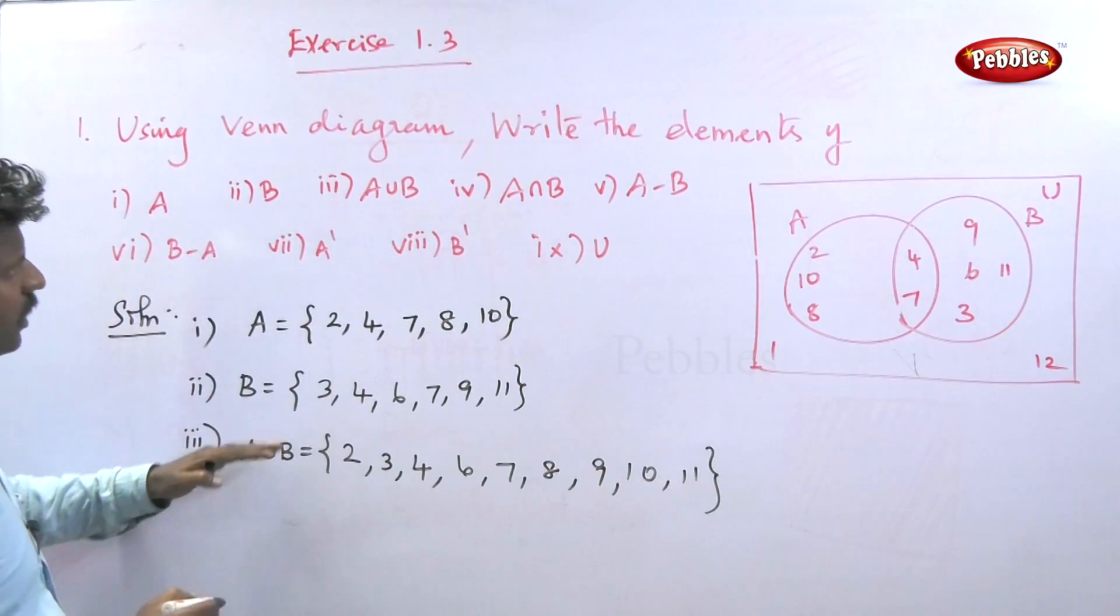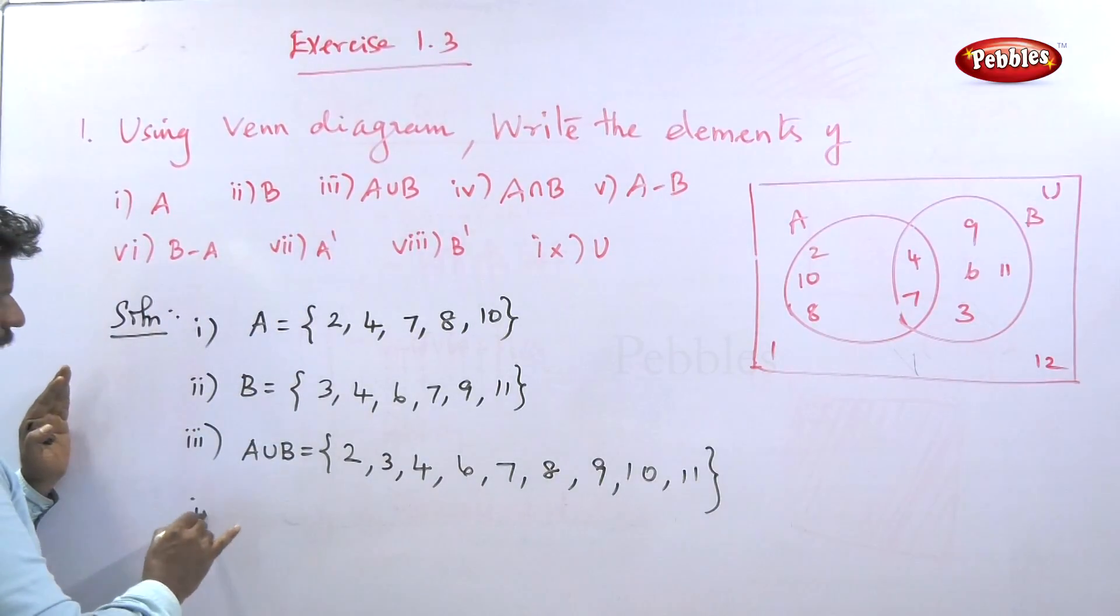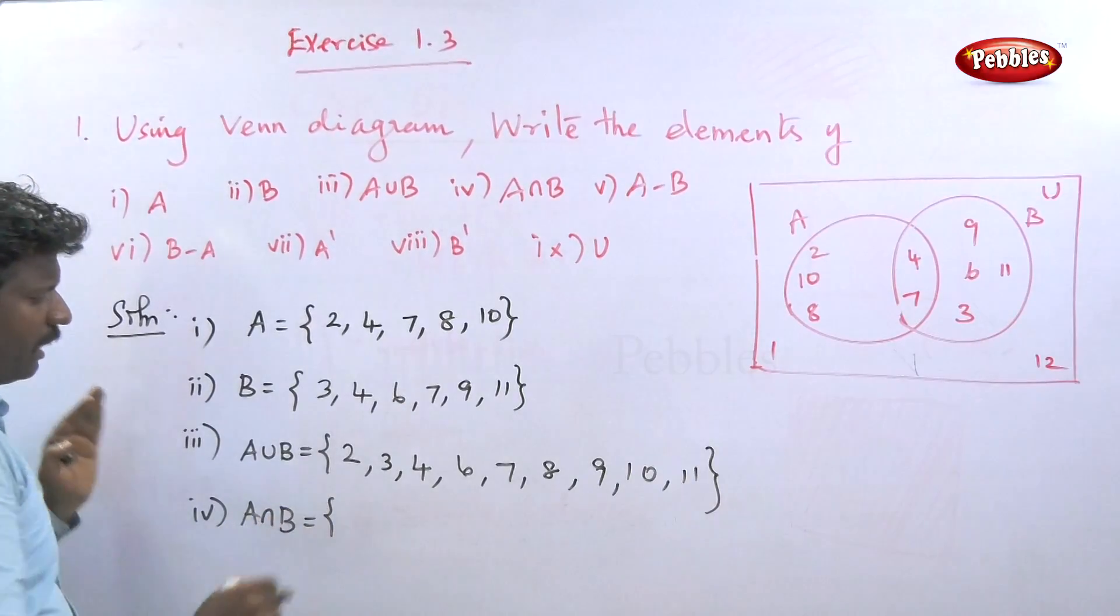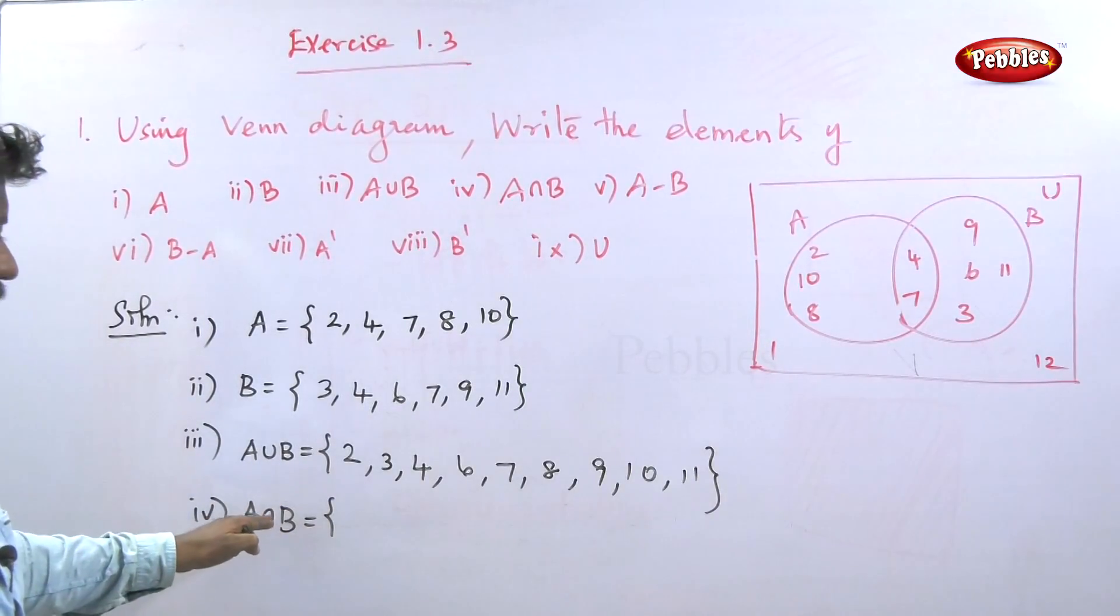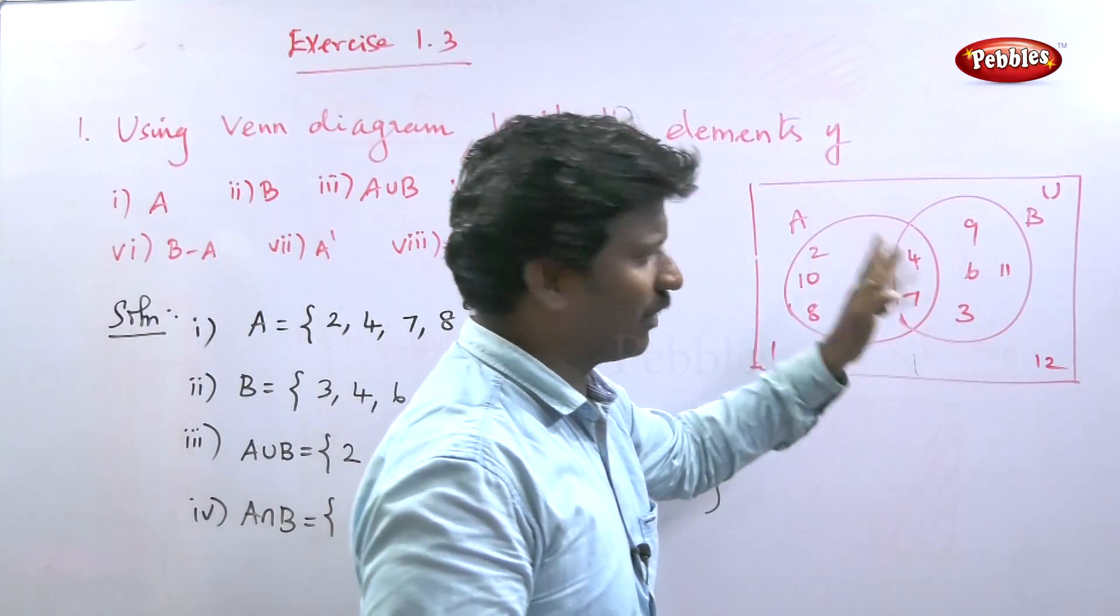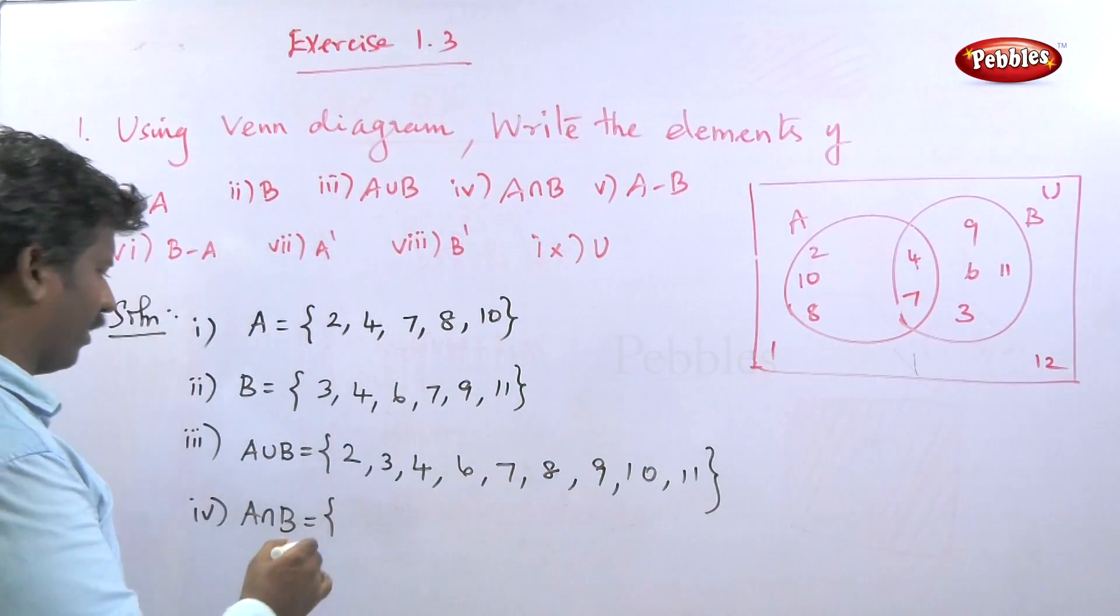Next, A intersection B. The common part, the elements in both A and B, are 4 and 7 only. This is A intersection B.